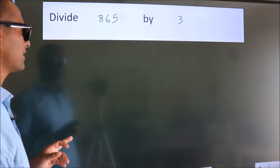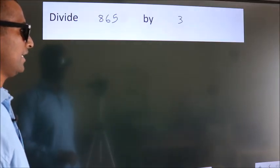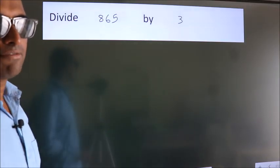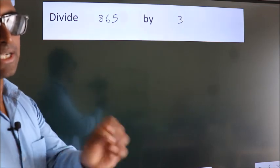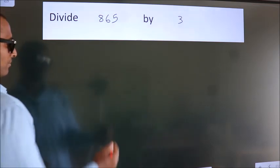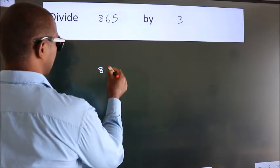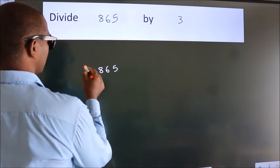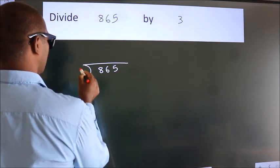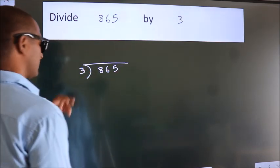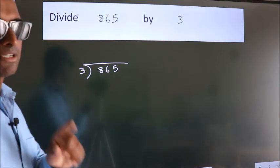Divide 865 by 3. To do this division, we should frame it in this way: 865 here, 3 here. This is your step 1.